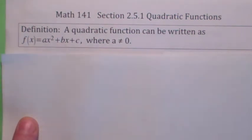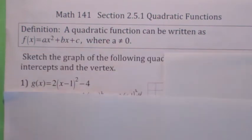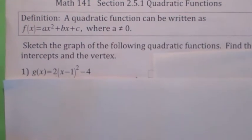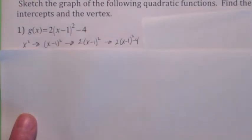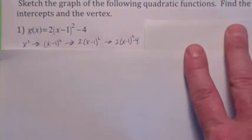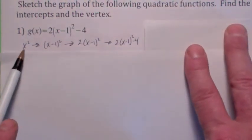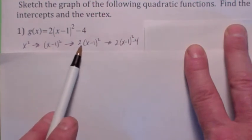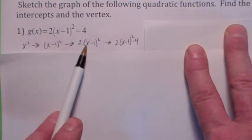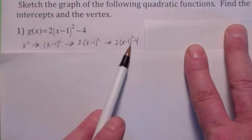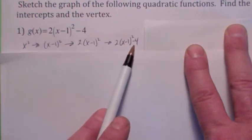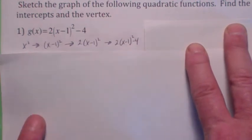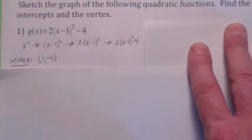Every quadratic function can be written as a linear transformation of x squared. If it's written in this form and you use our transformation sequencing, you can see: replace x with x minus 1 — that's a horizontal shift one to the right; multiply y by 2 — that's a vertical stretch; and then subtract 4 from y — that's a vertical shift. So the vertex becomes the point (1, −4).